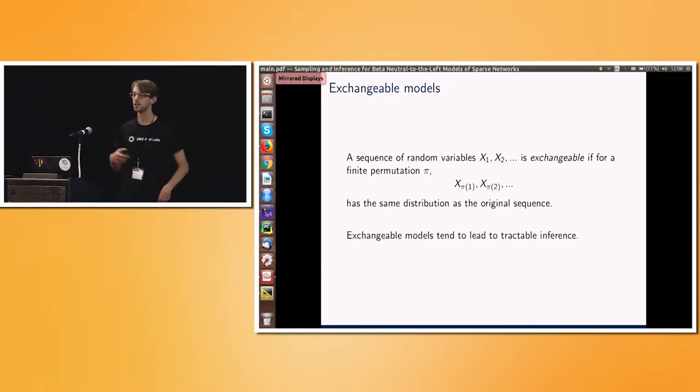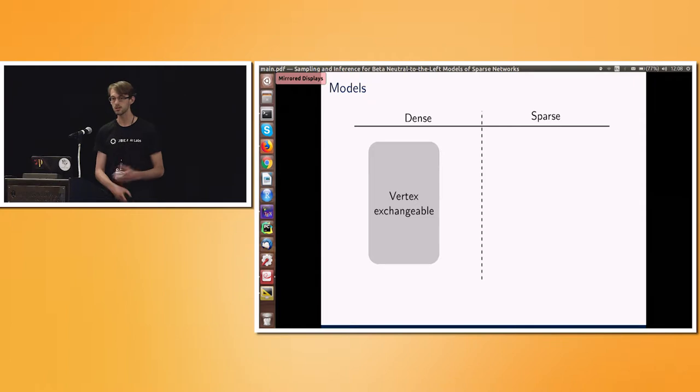And why is this an important building block for us? It's because most tractable inference schemes that we find out there are based on exchangeability. When we're looking at large structures, some form of exchangeability is the key that unlocks inference. So now I'm going to go back to this model web and build it up a little more slowly. So vertex exchangeable models, which were popular in the 70s and 80s, were conclusively proved by the Aldous-Hoover theorem to only give dense graphs. And as I hopefully motivated before, that's not really a useful case. We want to look at sparse networks.